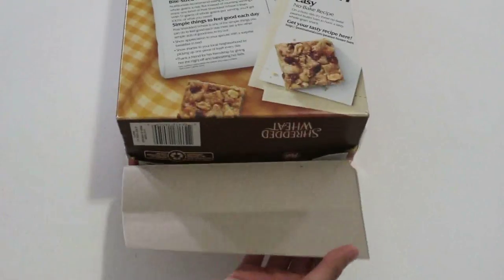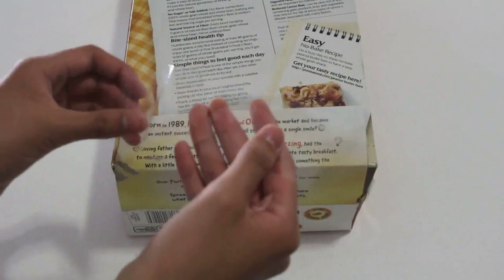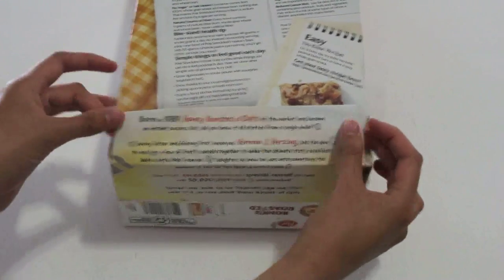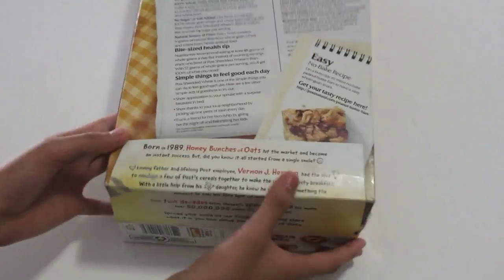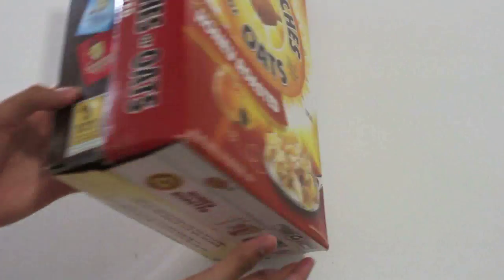Fold the bottom flap to cover the base and onto the face of the other box and then secure that with tape. And now you're left with a much bigger box.